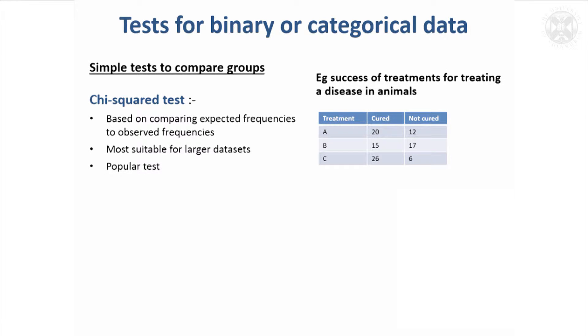All right, so we'll go back to the presentation now, the second part, where I'm going to be looking at tests for binary or categorical data, and also looking at correlation and regression.